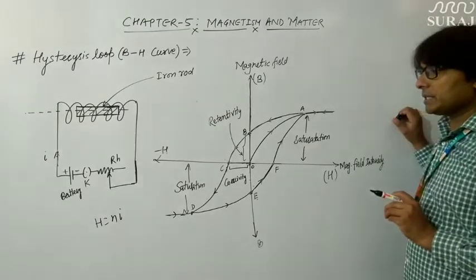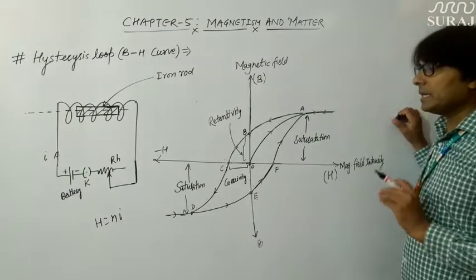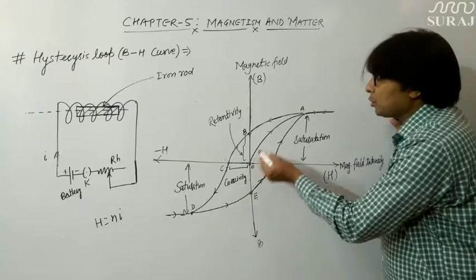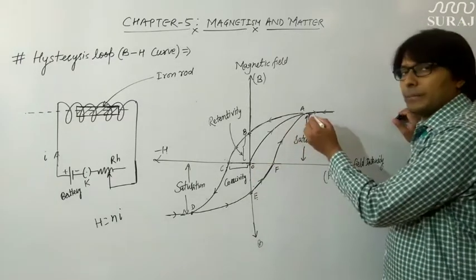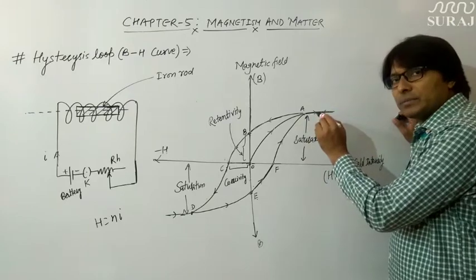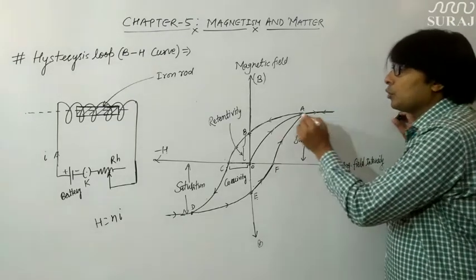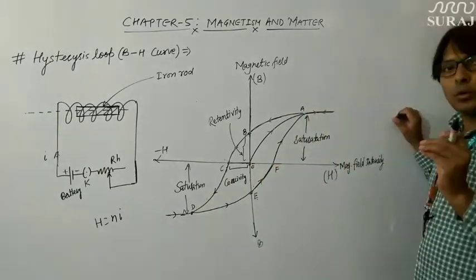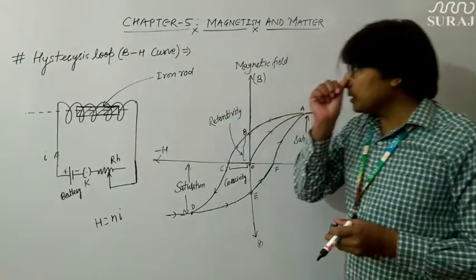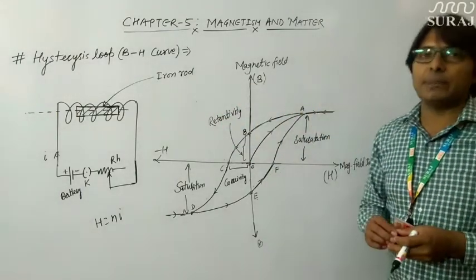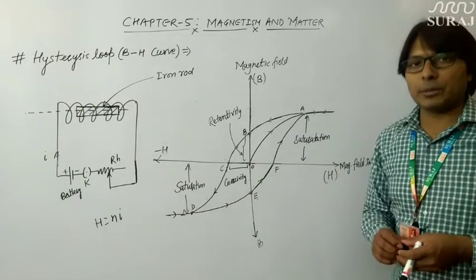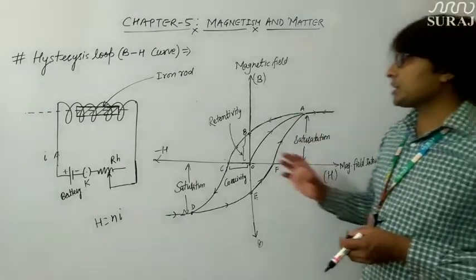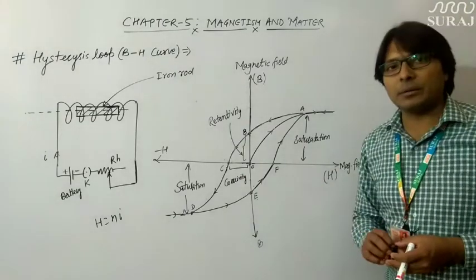One more thing to notice is that once the iron rod is magnetized, it will never follow the original OA path again — that path is only for the first time. Once the iron rod is magnetized, it follows the loop paths and does not return to point O. So now the iron rod is behaving like a permanent magnet. This is how we can design permanent magnets using the concept of the hysteresis loop.